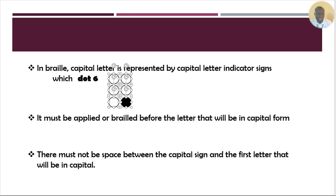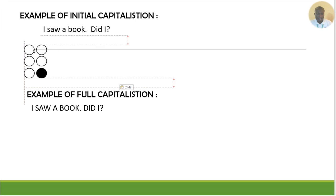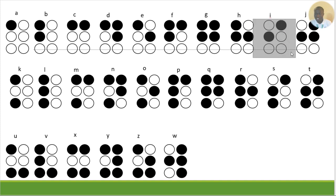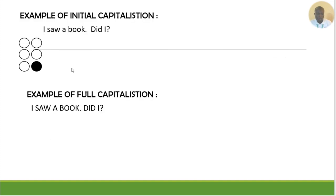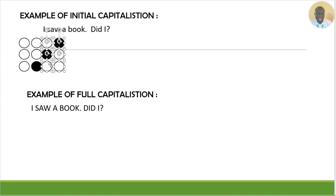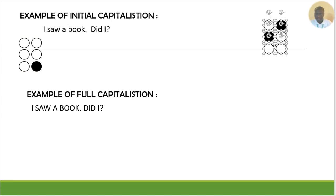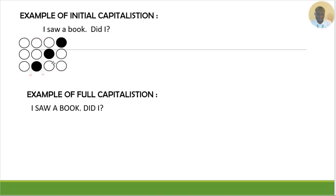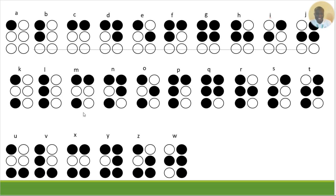Bring in the capital sign indicator, which is dot 6 — it comes first. Then bring in the letter 'I', which is dot 2-4. There must not be any space between the capital sign and the letter. After the 'I', since there is a space between 'I' and 'S' in the written word, we must create a space of at least an inch before brailling the next letter.